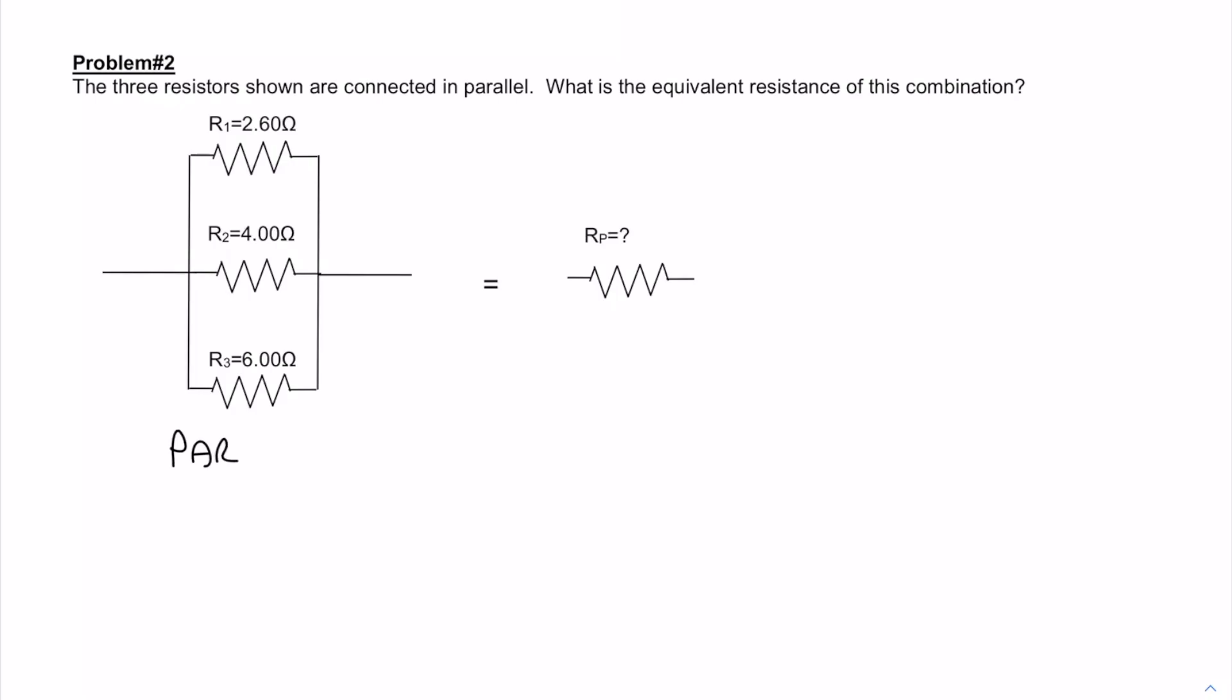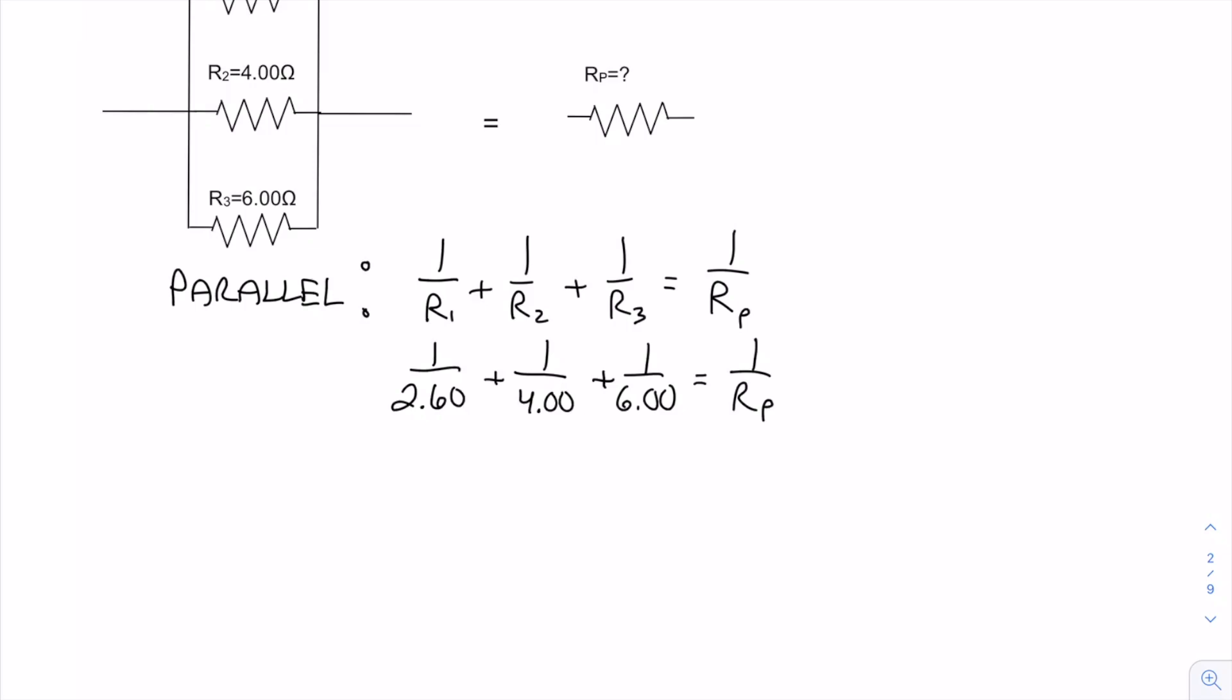Now adding resistors in parallel is a little trickier because you have to add the inverses of the individual resistances, and that will equal the inverse of the equivalent resistance. So I'll just plug in my resistances here. When I do this I get one over R parallel equals this nice long number.